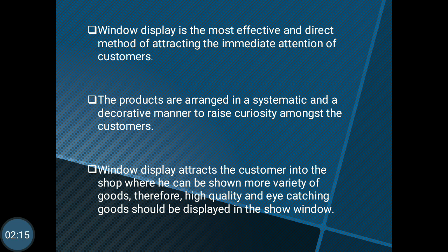High quality and eye-catching goods should be displayed in the show windows. In short, window display is defined as the most effective and direct method of attracting the customer and is one of the ways of advertising. Window display is commonly done through retailers. It attracts the customer into the shop and makes their mind to buy certain goods which are displayed in the window display. Small window display is called a shadow box, and displays are usually 1 to 1.25 meters and located at the side of the stores.